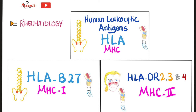Today, we'll discuss the general idea behind MHC. I had several videos about the specifics. For example, HLA-B27 is associated with ankylosing spondylitis, which affects the vertebral column, the spine, and the sacroiliac joints, among others. HLA-DR2 is associated with lupus and other diseases.